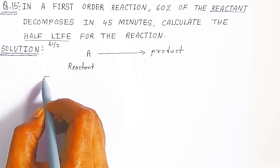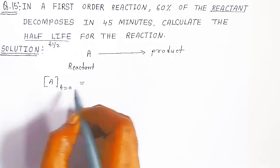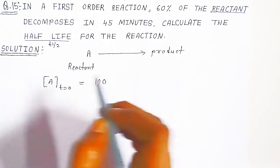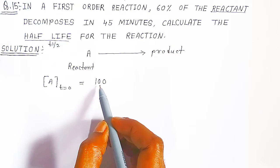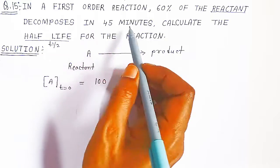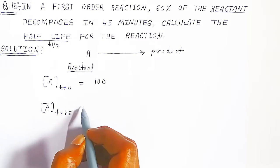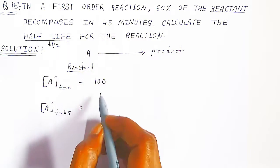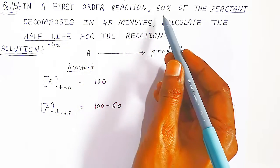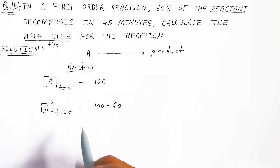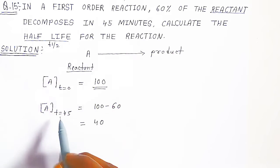The symbol for concentration of A: when time is 0, the initial concentration is taken as 100 parts, because it is given in percentage. When 60% decomposes in 45 minutes — out of 100, we subtract 60 — so the concentration of A at time 45 minutes is 100 minus 60, which equals 40.